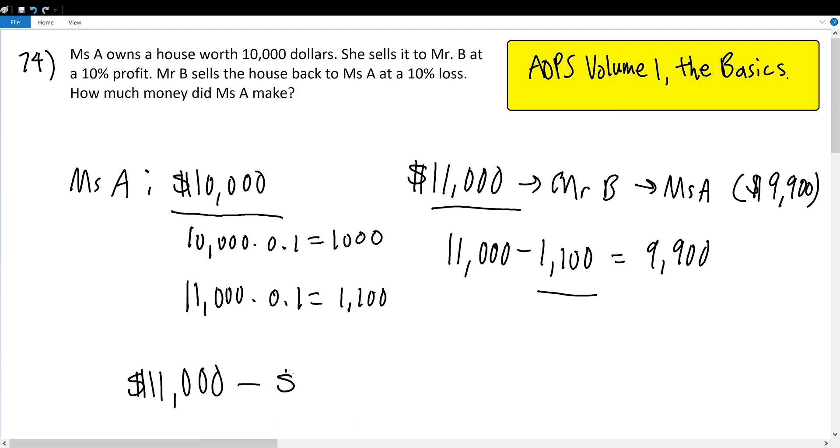But then, she lost $9,900 by buying the house back, and subtracting this will give us our profit to be $1,100, the solution to our question.